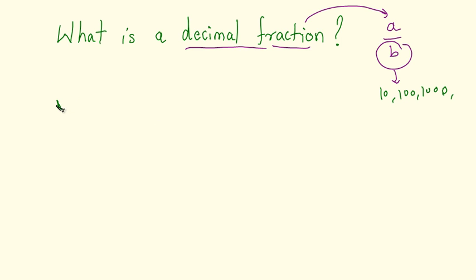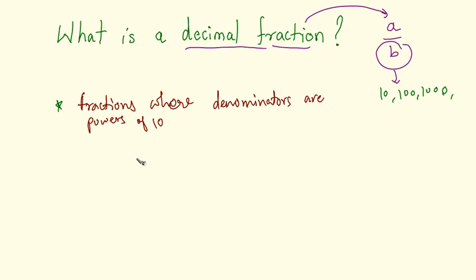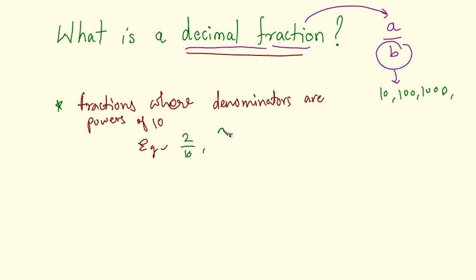Fractions where denominators are powers of 10 are known as decimal fractions. A few examples of these fractions are: 2 by 10, 3 by 100, or 5 by 10,000. So these are all decimal fractions.